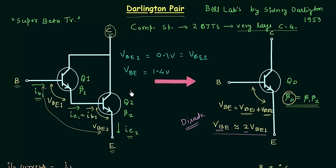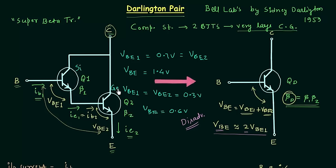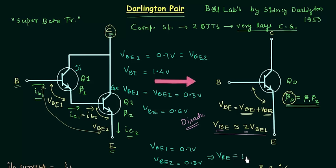When both transistors are germanium transistors, VBE1 equals VBE2 equals 0.3V, which implies VBE equals 0.6V. Now consider the case when the two transistors are not the same: if Q1 is a silicon transistor and Q2 is a germanium transistor, then VBE1 equals 0.7V and VBE2 equals 0.3V. This implies the barrier potential of the Darlington transistor equals 1V.